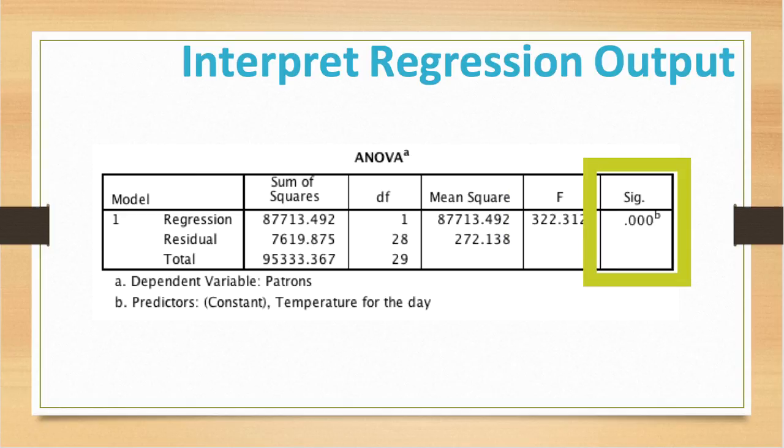When we look at this, we can see that the F is 322.312. That is significant because of the value in the SIG column, which is your significance value, equal to .000. This informs us that there is less than a 0.1% chance that an F-ratio this large would happen if the null hypothesis was true.